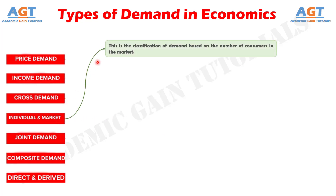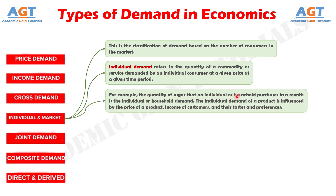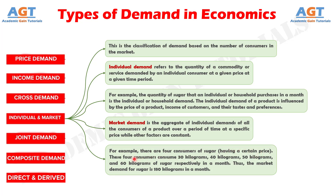Individual demand and market demand classify demand based on the number of consumers. Individual demand refers to the quantity of a commodity demanded by an individual consumer at a given price and time period. For example, the quantity of sugar a household purchases in a month is individual demand, influenced by price, income, and tastes. Market demand is the aggregate of individual demands of all consumers at a specific price. For example, if four consumers buy 30 kg, 40 kg, 50 kg, and 60 kg of sugar respectively in a month, the market demand is 180 kg.